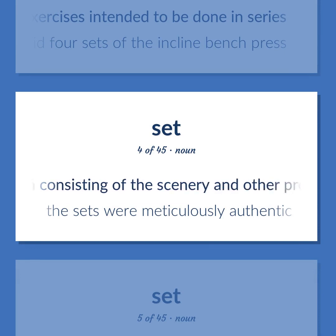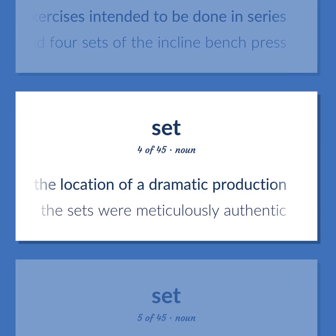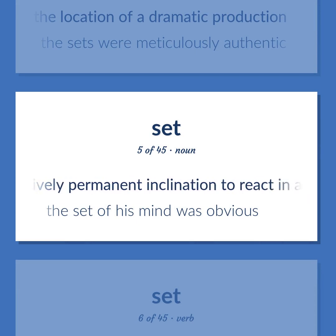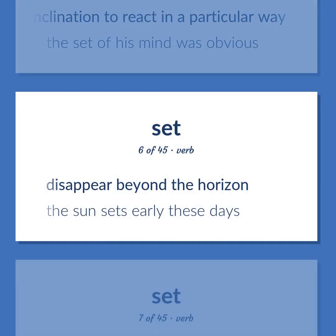Set: Representation consisting of the scenery and other properties used to identify the location of a dramatic production. Example: The sets were meticulously authentic. A relatively permanent inclination to react in a particular way. Example: The set of his mind was obvious. Disappear beyond the horizon. Example: The sun sets early these days.